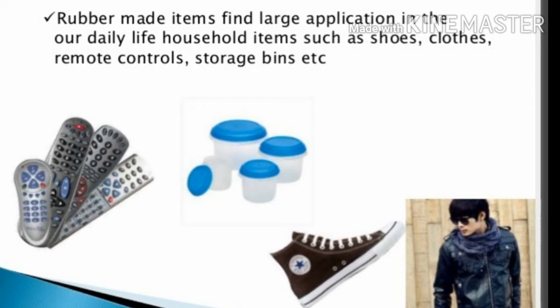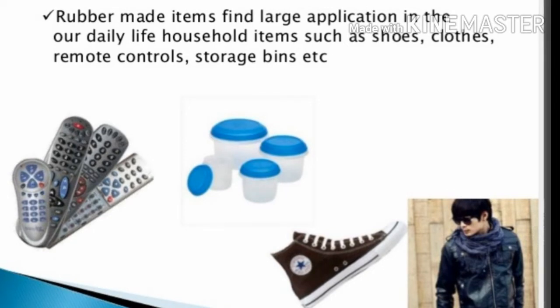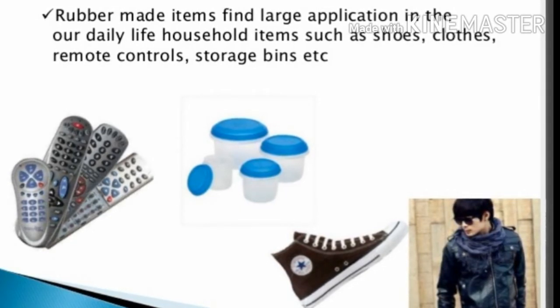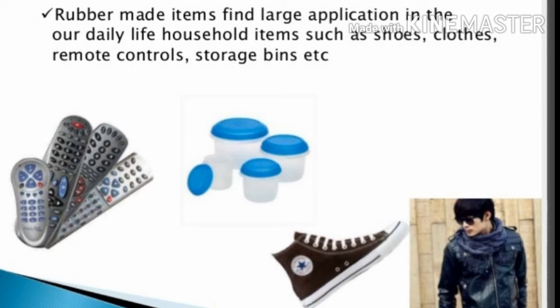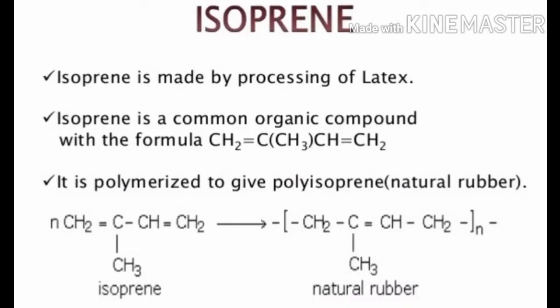Rubber-made items find large applications in our daily life. Household items such as shoes, cloths, remote controls, and storage bins are examples. In daily life we use many items made from rubber. Now we will see how natural rubber is made and which monomer is used.